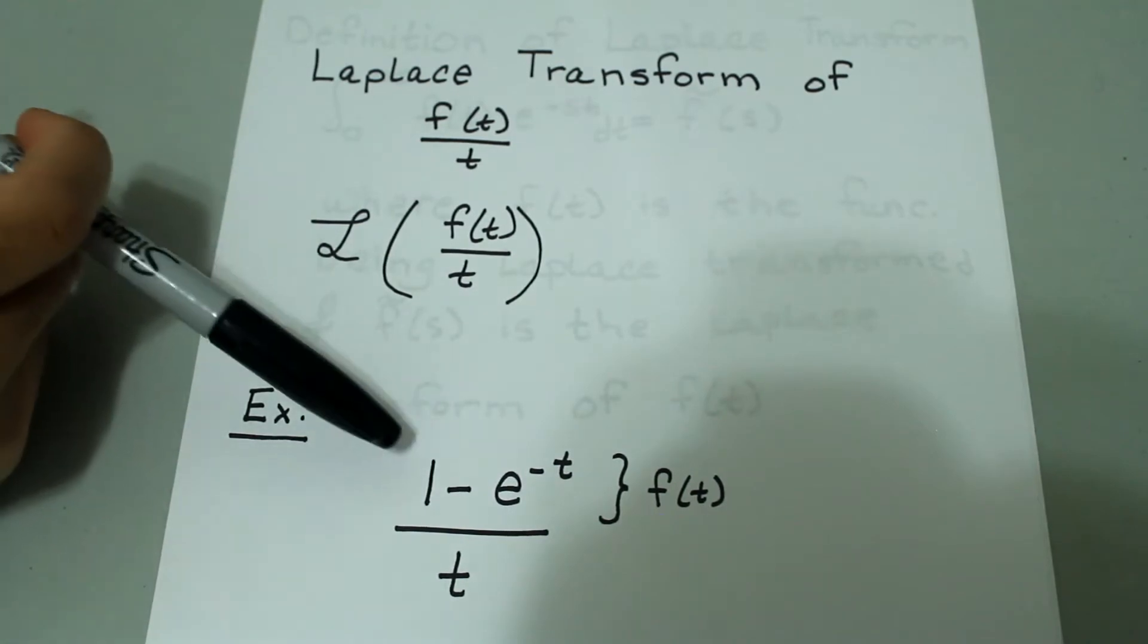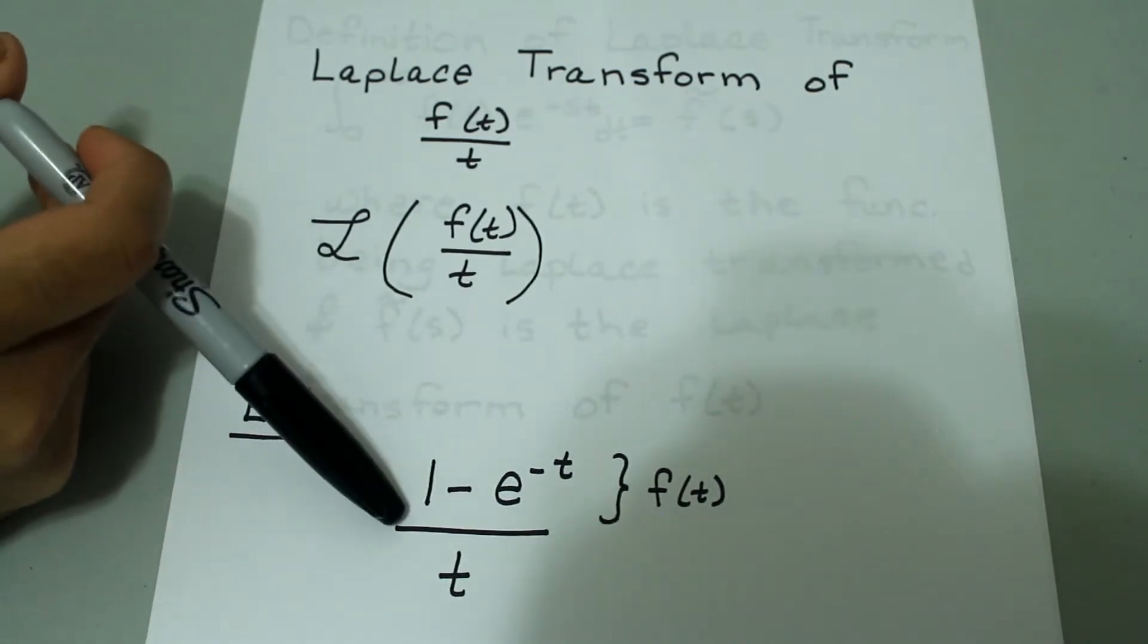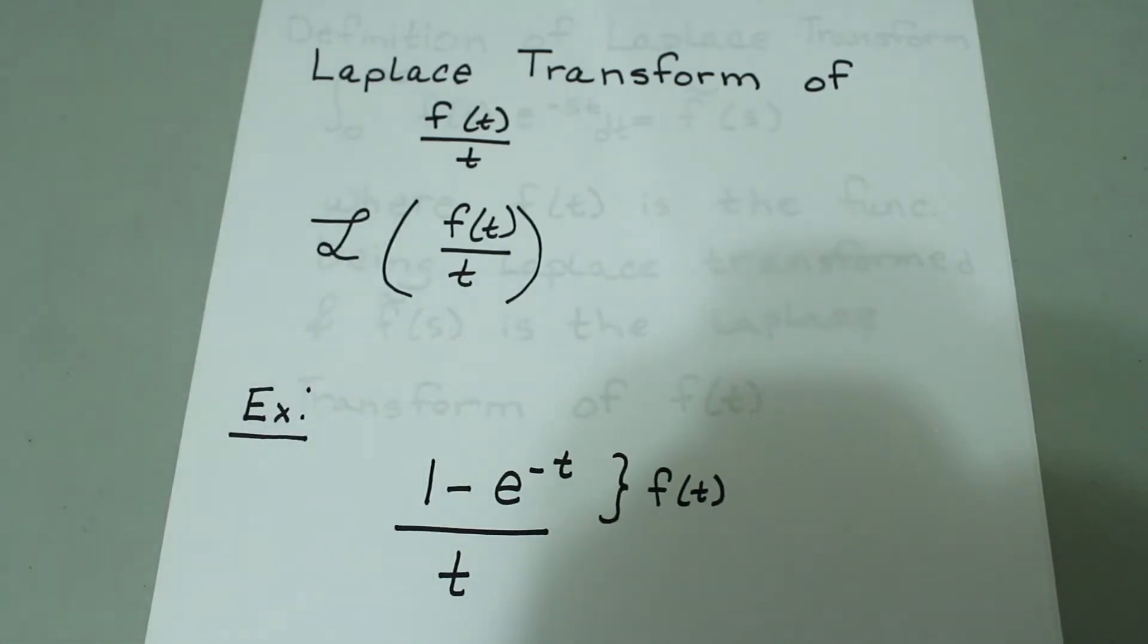The example we are going to work through is 1 minus e to the negative t over t. So please watch the entire video. I want to try to simplify this as much as I can, and at the end I'll try to present this to you in the way that I think about it. Without further ado, let's get to it.